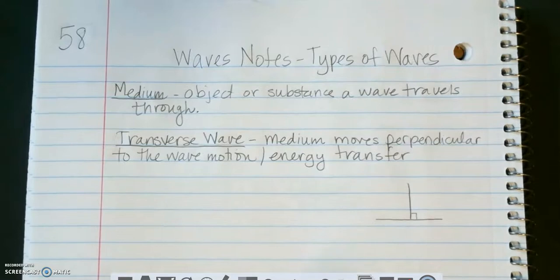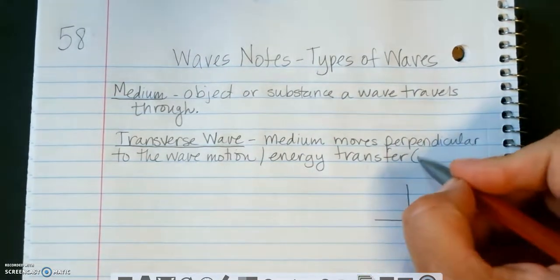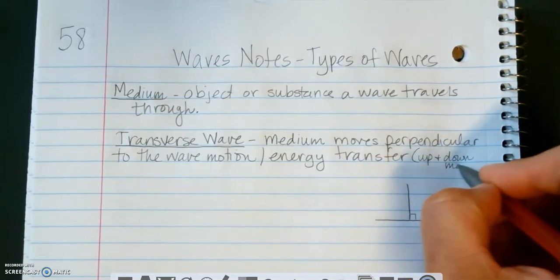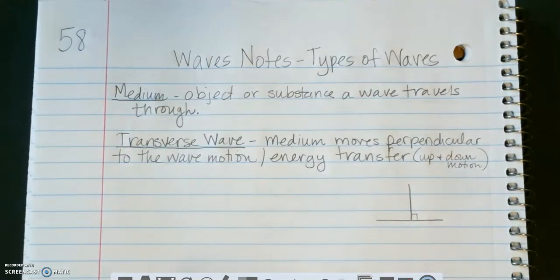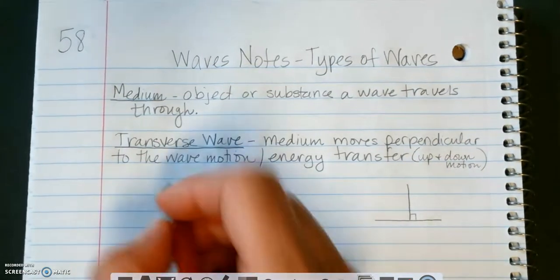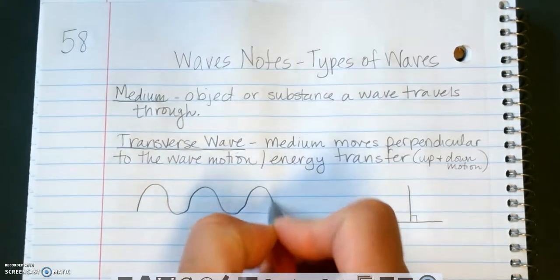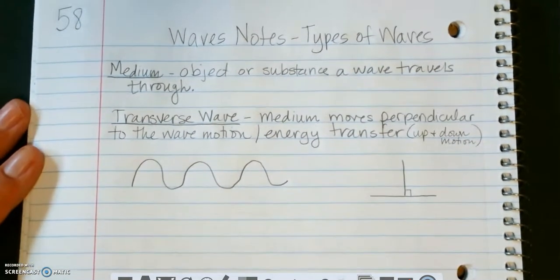So when we're doing a transverse wave, they tend to make sort of an up and down motion. I'll put that in parentheses over here. An up and down motion. So I'm going to draw a quick transverse wave. And it would look something like this. You guys have seen this in pretty much any type of wave reading or the gizmo you've done.